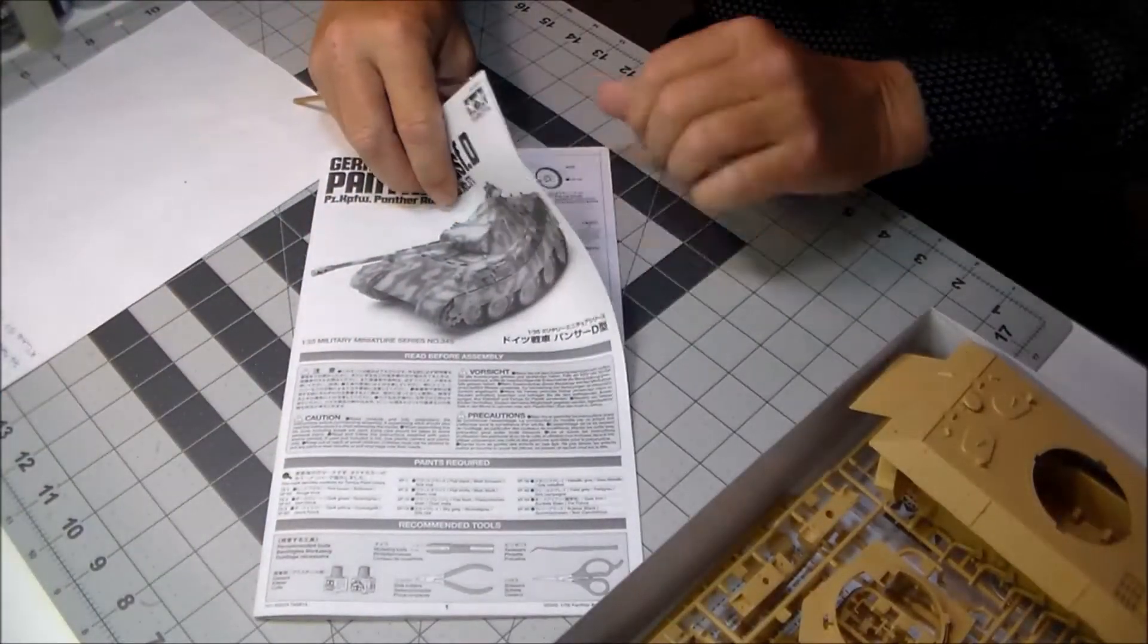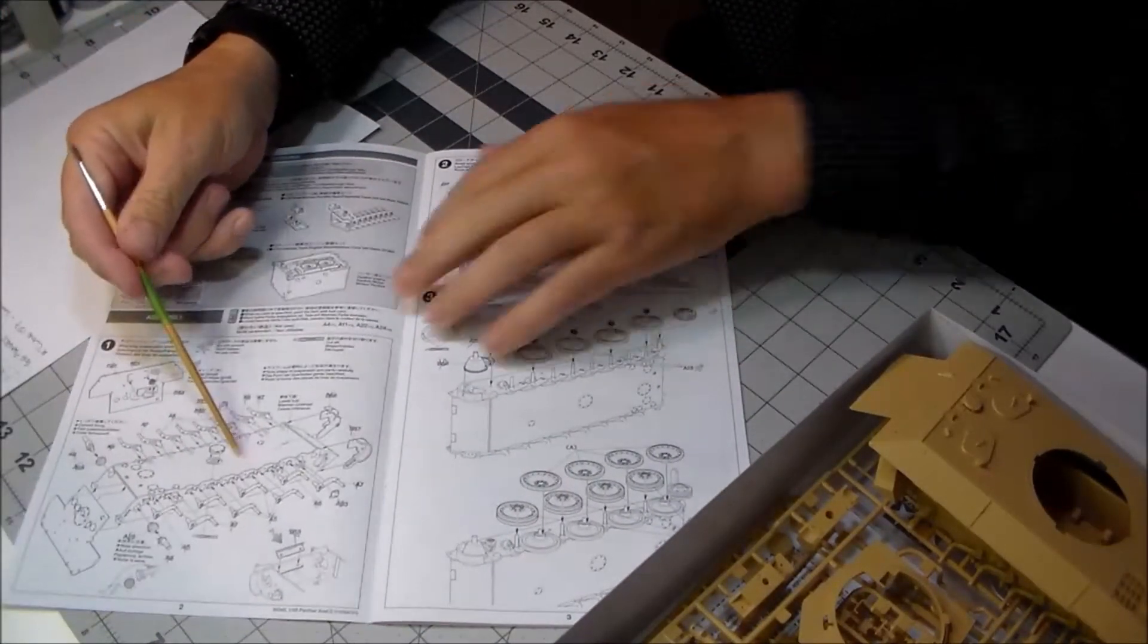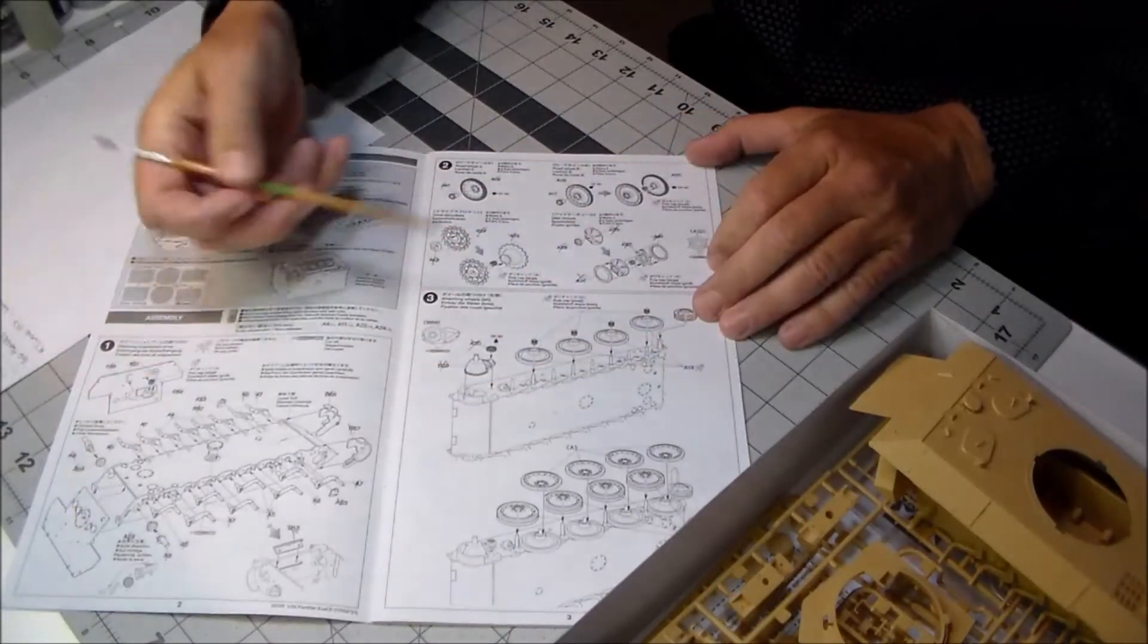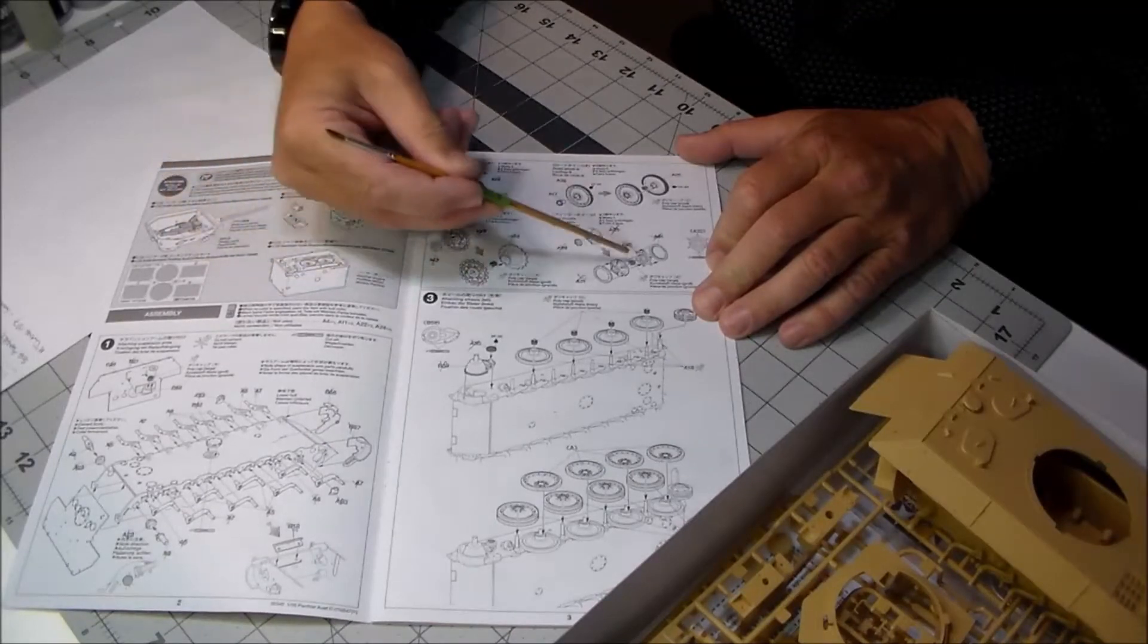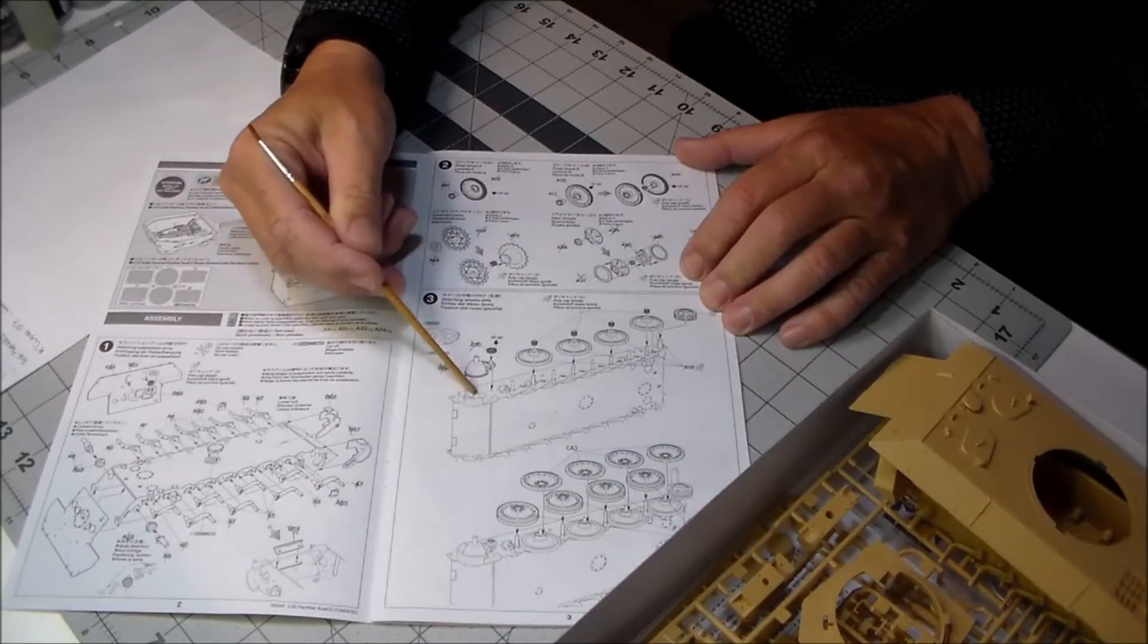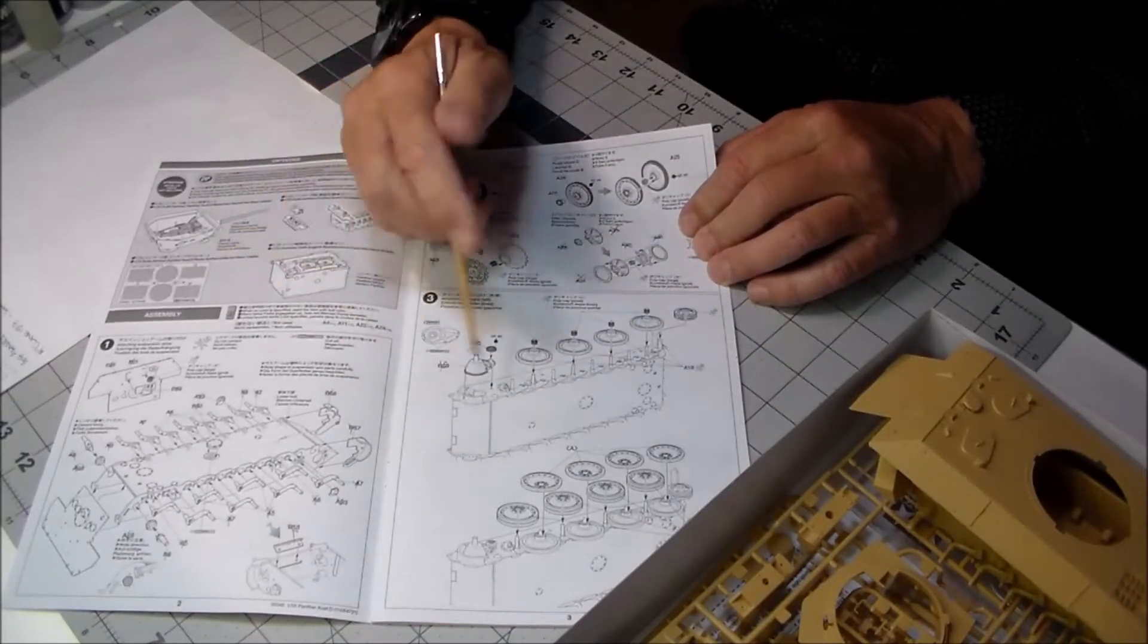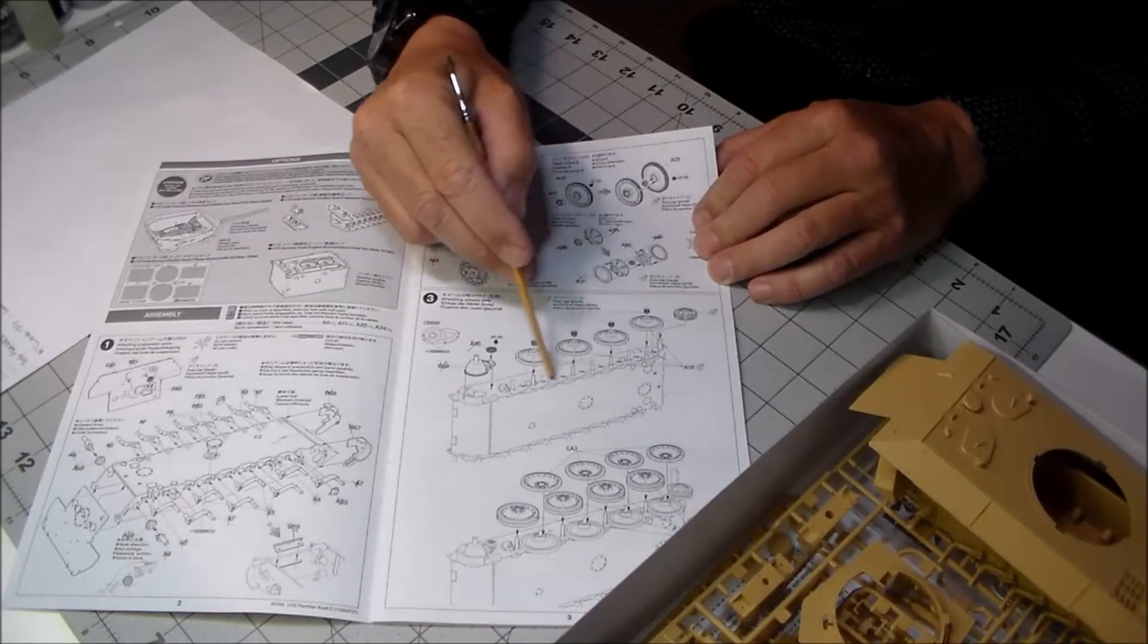I have finished step one, which is the suspension parts and the back plate. I've got all the wheels, drive sprockets, and idlers - those are all complete. I put on the final drive housings. I have not installed the wheels, as you know from other videos. I never do that until after I get the lower hull painted and the weathering complete, that way I can get down in all this detail.